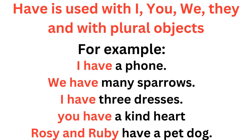Now, where do we use 'have'? Have is used with I, you, we, they — and with the plural objects. Plural objects means more than one object — two, three, four, or more. Ek se zyada agar objects hain, woh plural objects mein count honge. So have is used with I, you, we, they, and with the plural objects.